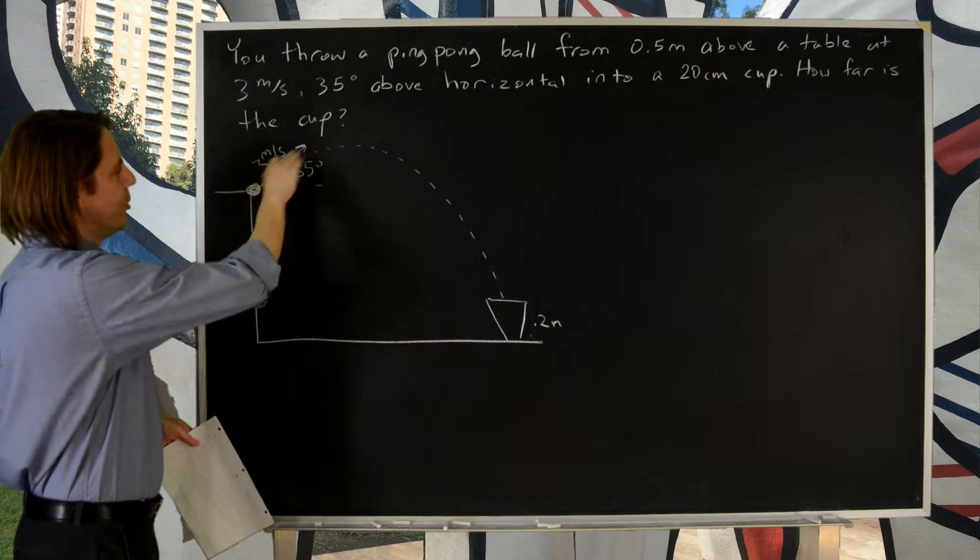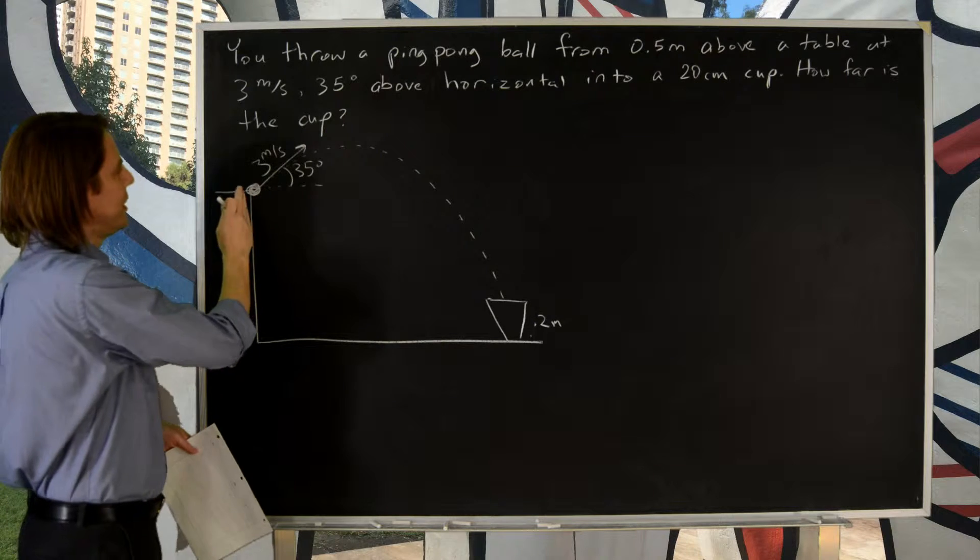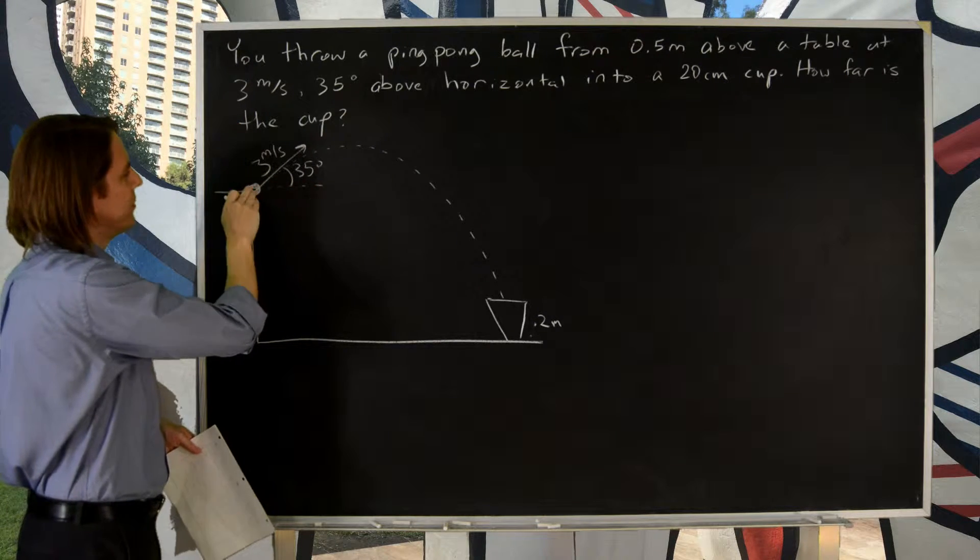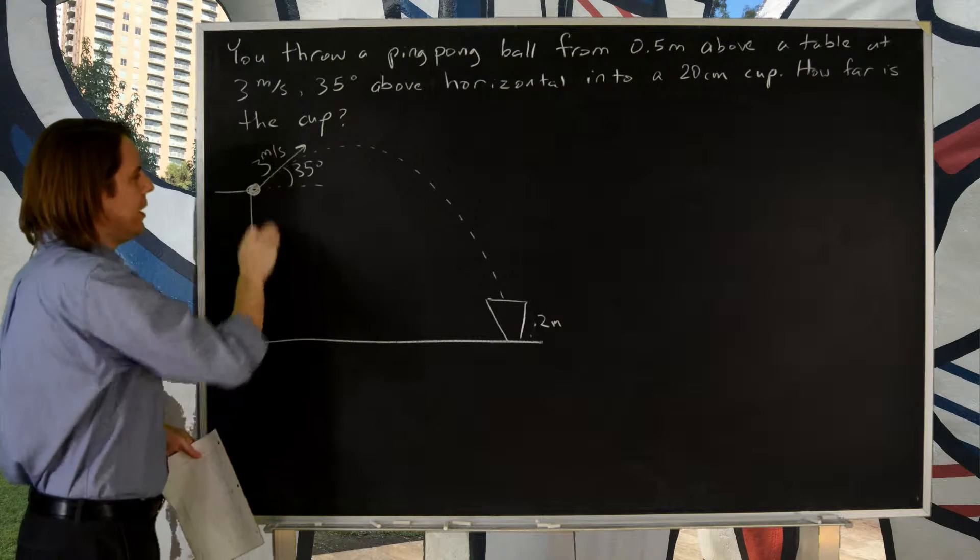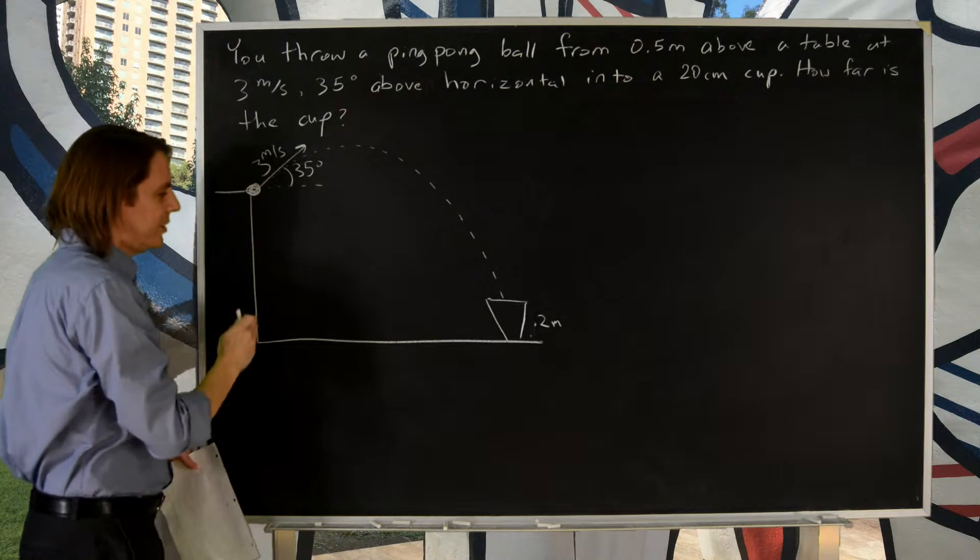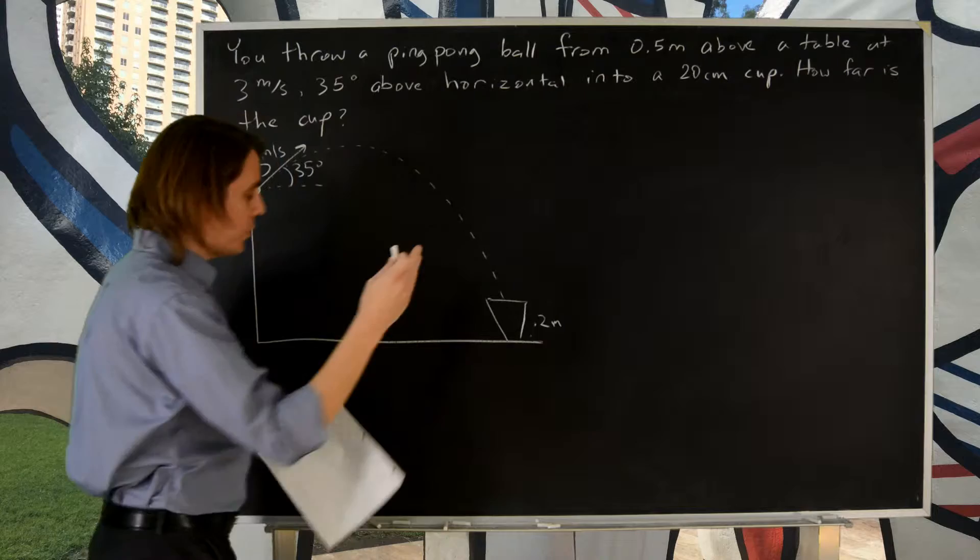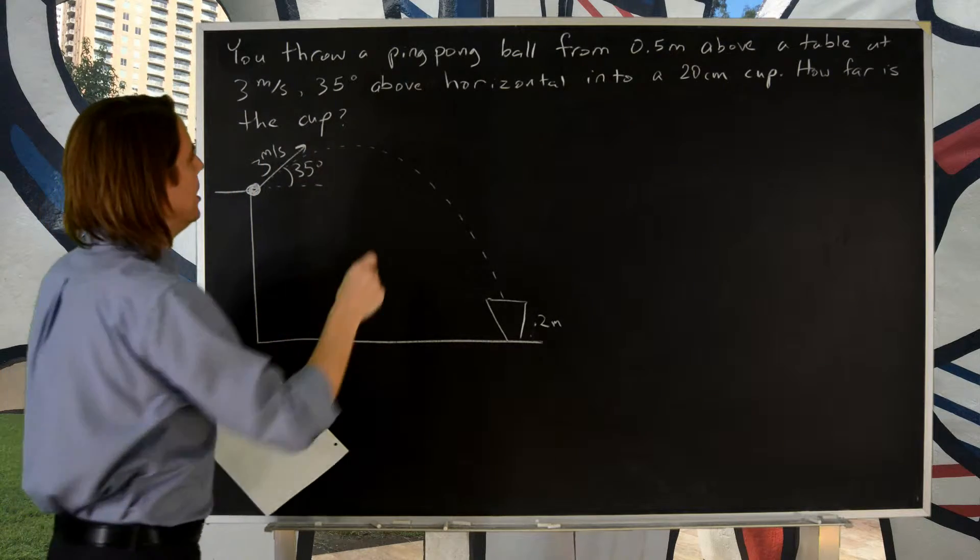The first thing you're always going to do is break this into components. You're going to say, what is my Vy and what is my Vx? Because Vy, the initial y velocity, tells you how long you're in the air. And Vx stays constant and tells you how far you go. So let's go ahead and just do that before we think too much about the problem.